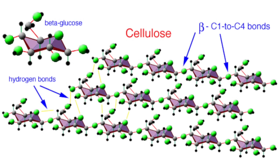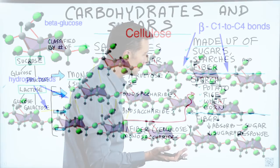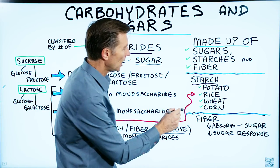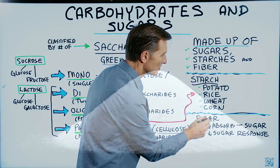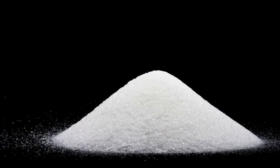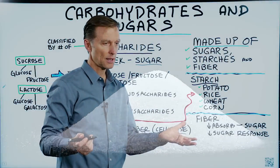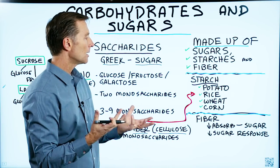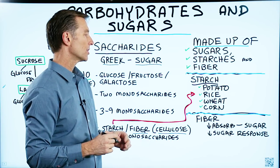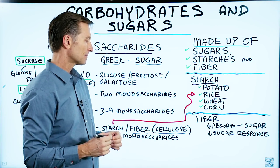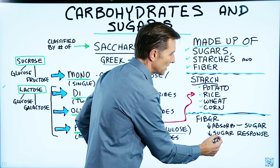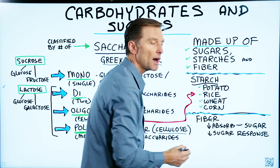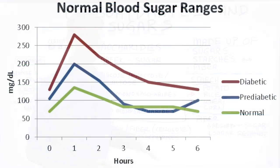The thing about fiber that you should know is that fiber helps decrease the absorption of sugar. So the more fiber you have — like in celery — the less absorption of sugar you're going to have. Fiber also decreases the sugar response, so it decreases the sugar spike.